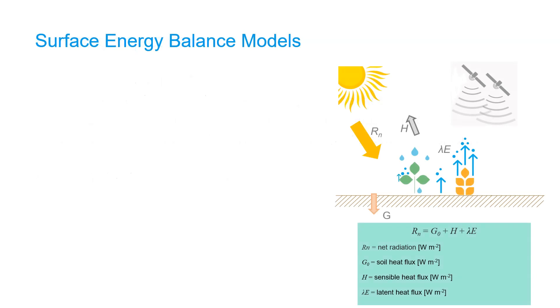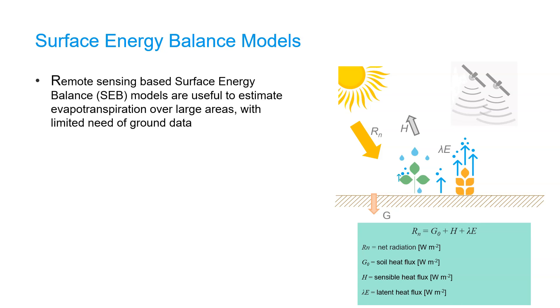Remote sensing based surface energy balance models model the partitioning of the net radiation in the soil heat flux, sensible heat flux, and latent heat flux. These models are useful to estimate evapotranspiration over large areas with a limited need of ground data. Most of these models calculate the net radiation, soil heat flux, and sensible heat flux separately, and then the latent heat flux is often estimated as the rest term to close the energy balance.